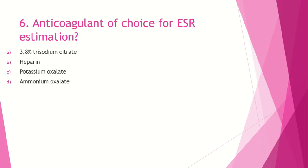Question number 6: Anticoagulant of choice for ESR estimation. Option A, 3.8% trisodium citrate; option B, heparin; option C, potassium oxalate; option D, ammonium oxalate. The correct answer is option A, 3.8% trisodium citrate. For detailed anticoagulant information, please refer to the previous dedicated video.